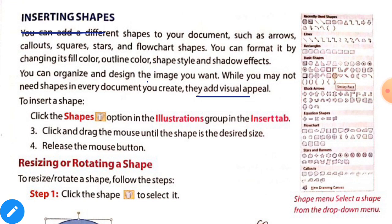To insert a shape, click the shapes option in the illustrations group in the insert tab. Click and drag the mouse until the shape is the desired size. Release the mouse button.